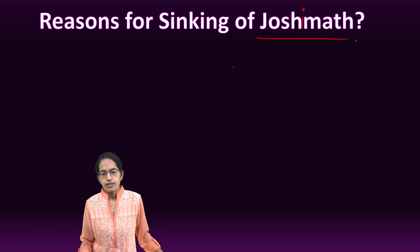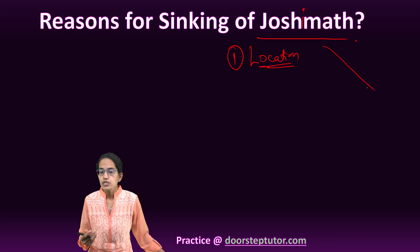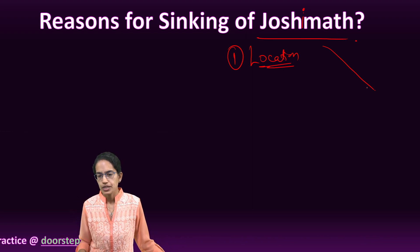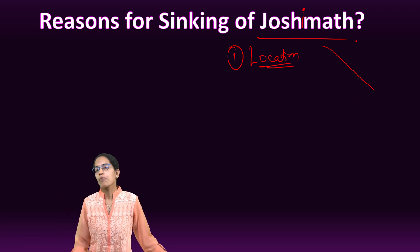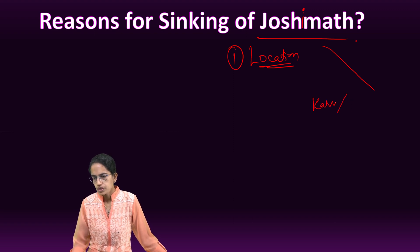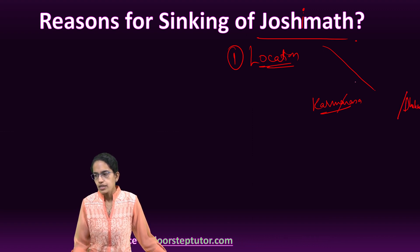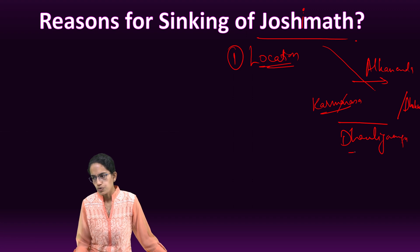The reasons for the sinking of Joshimath: the first important factor is the location and terrain. As mentioned, it is on a slope — whether because of a landslide with debris deposited and stabilized over time, or because of glacial moraines. In reality, there are four important rivers flowing around it: Karmanasa on the west, Dhankanal on the east, Alaknanda in the north, and Dhali Ganga in the south.